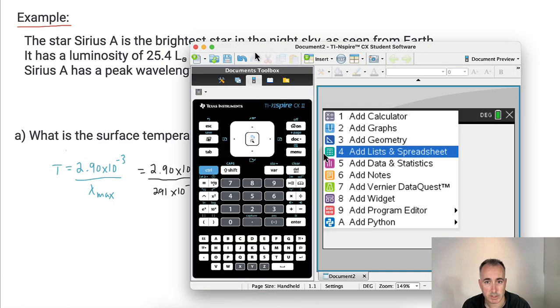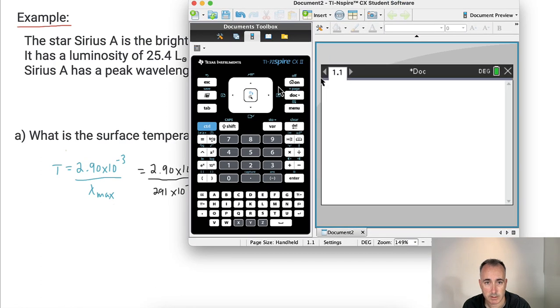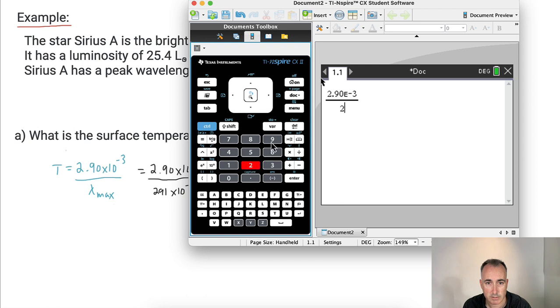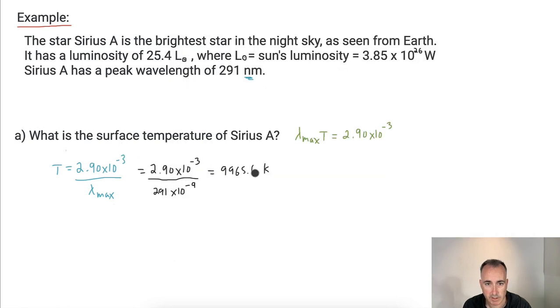So I'm going to do this on my trusty old calculator here. I'm going to say 2.90 times 10 to the minus 3 all divided by 291 times 10 to the minus 9. I get this number, 9965.6 Kelvin. Keep in mind there's lots more decimals. Now I'm allowed three significant figures here, so I'll round it to three significant figures. So that means I'll make it 9970 Kelvin.